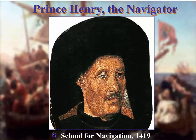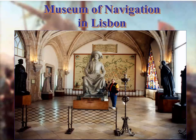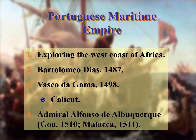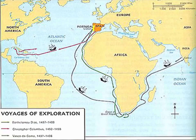Prince Henry the Navigator, brother of the King of Portugal, opened the school for navigation in 1419. The Portuguese Empire explored the west coast of Africa. Vasco da Gama went to Calicut. Admiral Alfonso de Albuquerque went to Goa and to Malacca, both in India. We can see on a map the routes of Diaz, da Gama, and later Christopher Columbus.